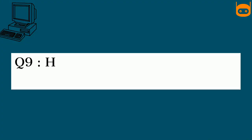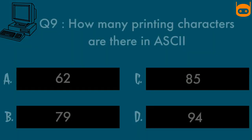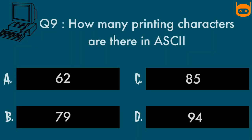Our second last question is: How many printing characters are there in ASCII? Option A, 62. Option B, 79. Option C, 85. Option D, 94. Your time starts now.